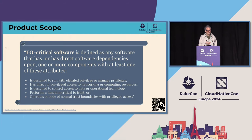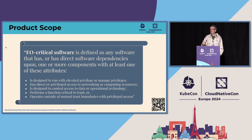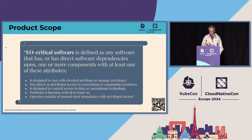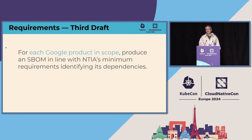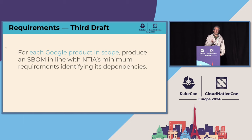NIST shows up with a document giving actual guidance on what NIST defines as EO-critical software — a list of characteristics which software has to meet to be considered critical in the context of the EO. That gave great guidance as to where we should focus our efforts and which products to prioritize, and how to phase our approach to building SBOMs across Google's product portfolio. We'll now make a slight tweak: 'for each Google product in scope.' But there's nuance lurking in this word 'dependencies.'